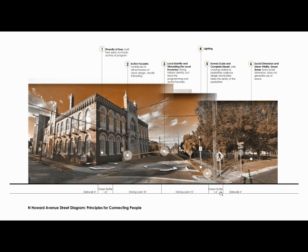The conflict here, though, is the accessibility to the park. You can see that it lacks social dimension because it has fences and doesn't generate use of space. Although we understand that fencing can be a safety component to keep kids off the street, maybe there could be softer edges for easier accessibility.